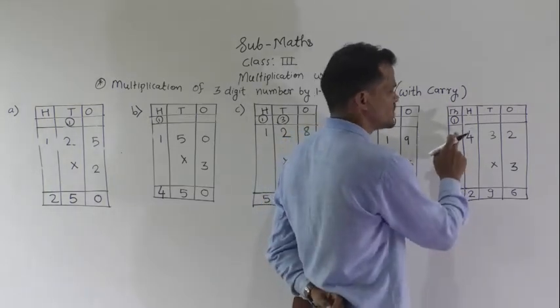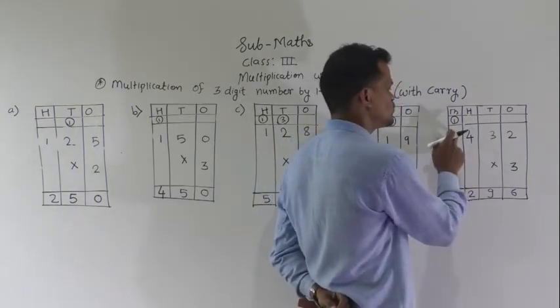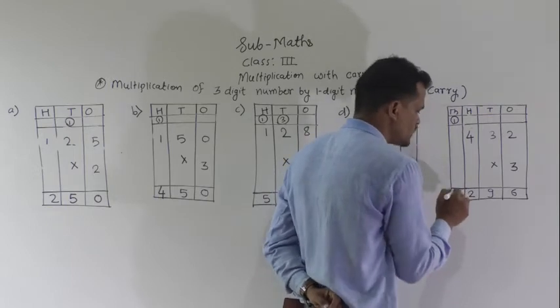Now, there is no digit there, so consider 0 is there. 3 into 0 is 0. 0 plus 1 is 1.